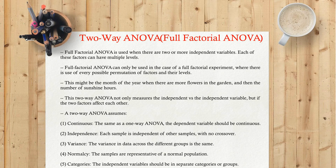A two-way ANOVA assumes: one, continuous — the same as a one-way ANOVA, the dependent variable should be continuous; two, independence — each sample is independent of other samples, with no crossover; three, variance — the variance in data across the different groups is the same; four, normalcy — the samples are representative of a normal population; five, categories — the independent variables should be in separate categories or groups.